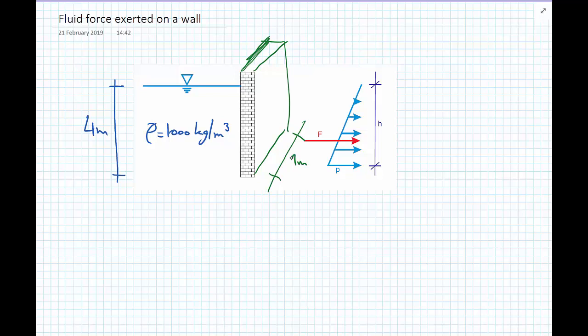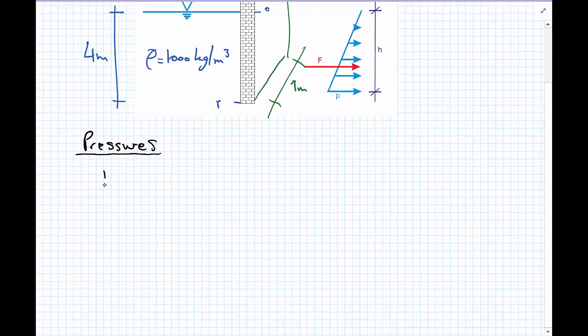So the first thing we're going to do is calculate what the pressures are. We'll calculate the pressure here at 0 depth and the pressure here at the 4 meters depth. Pressure at 0 meters depth equals 0.